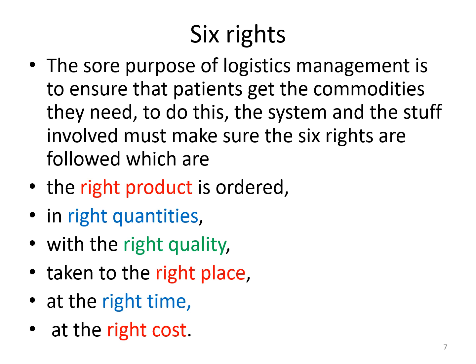Number one: right product. In a logistics system, people involved should be able to select the right product. If the right product is not selected, programs at a facility will not run. Number two: right quantity. As products are being selected, they should be collected in the right quantities — to prevent overstock and to prevent expiry, because if you have too many items you won't be able to use all of them and some may expire.